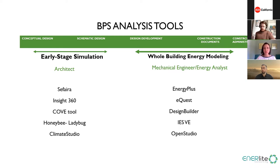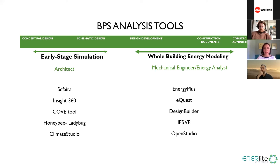When we look at building performance analysis tools, we can categorize them into two major categories. The first is early-stage simulation, mostly performed by architects: Sapphira, Insight 360, Cove Tool, Honeybee, Ladybug, and Climate Studio. The second category consists of more accurate and advanced energy models performed by energy analysts or mechanical engineers: Energy Plus, eQUEST, Design Builder, and OpenStudio. There are many other tools used in firms across the U.S. and around the world, but we will mostly cover these tools today.